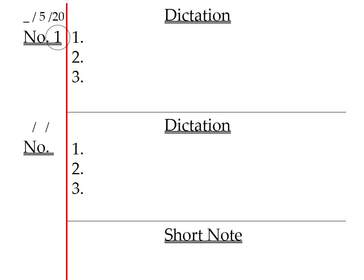Are you ready? The first word: human, human. Number two: genetics, genetics. And number three: traits, traits. Once you're done, try to see if you got it all correct and make sure to put a check mark beside it.